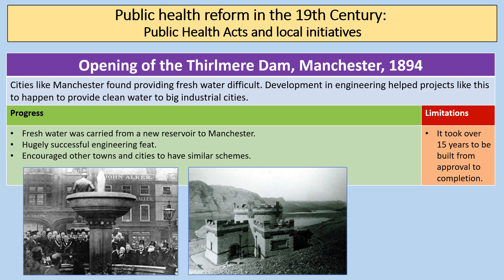The opening of the Thirlmere Dam in Manchester in 1894 is a good case study. Cities like Manchester that had expanded massively during the Industrial Revolution found providing fresh water difficult. Developments in engineering made projects like this possible — fresh water was carried from a new reservoir at Thirlmere in the Lake District all the way down to Manchester. It was a hugely successful engineering feat that encouraged other towns and cities to adopt similar schemes. However, one limitation is that it took 15 years from approval to completion.